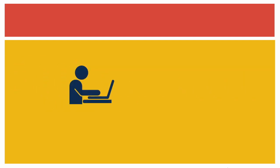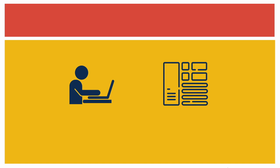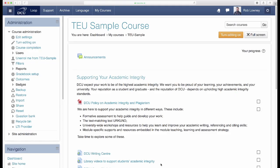Let's look at how you might do this by taking DCU's virtual learning environment Loop as an example. It's a good idea to add some specific direction about avoiding academic integrity breaches to your Loop assignment.